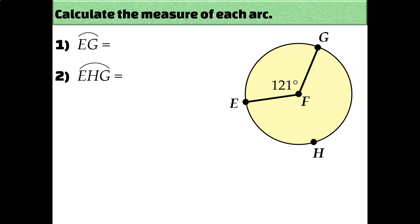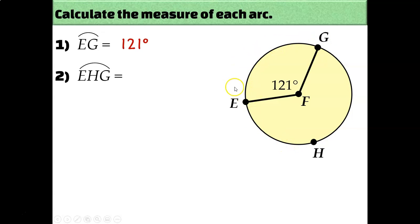Let's calculate some arc measures. The measure of arc EG: since angle EFG is 121 degrees and arc EG is the arc formed by that central angle intersecting the circle, arc EG is also 121 degrees. Arc EHG is the remainder of the 360 — the whole circle minus 121 — so the measure of arc EHG is 239 degrees.